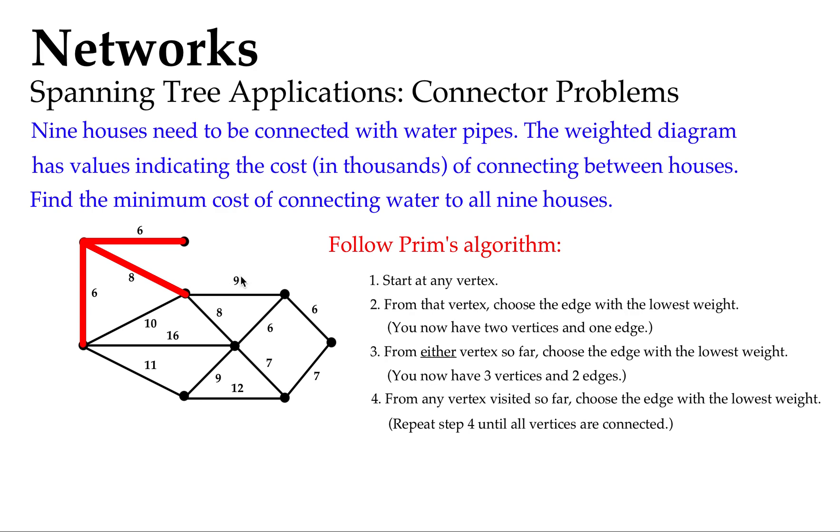So from the red, we have options on edges of 9, 8, 16, 10, 11, and I think I'm going with the 8. Then from anywhere on my red diagram, I'm looking for the lowest number. I'm going to choose that 6. And another 6. Now I have a choice to get to this house from 7 going there, or 7 going there. It really doesn't matter which one I choose.